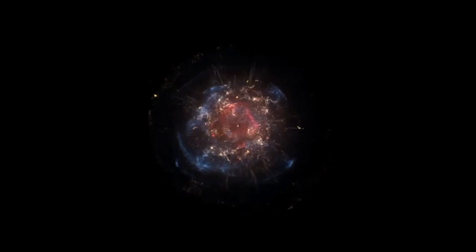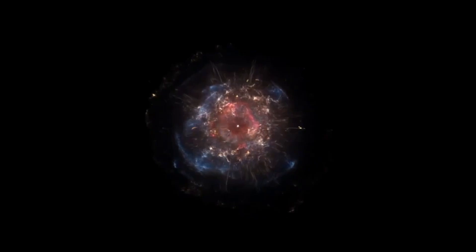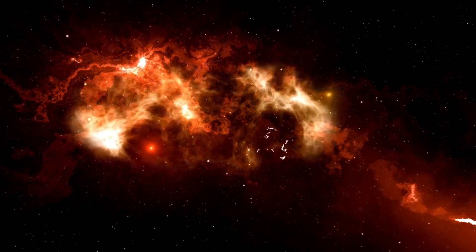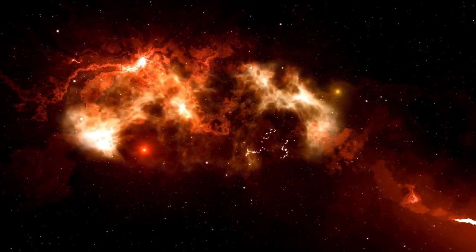Betelgeuse, often referred to as the shoulder of Orion, is one of the brightest stars in the night sky and one of the largest stars known to humanity. If placed at the center of our solar system, its surface would extend beyond the orbit of Mars, engulfing the inner planets in its fiery embrace.